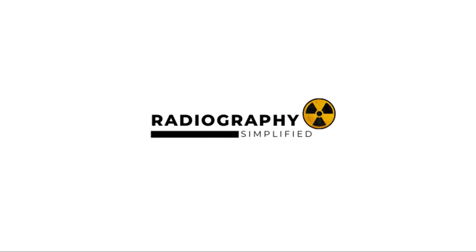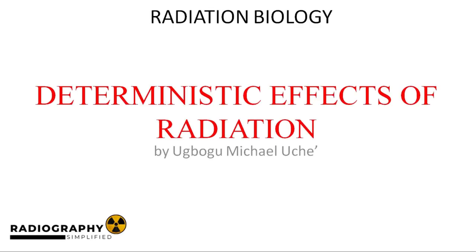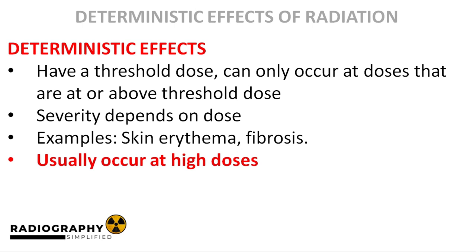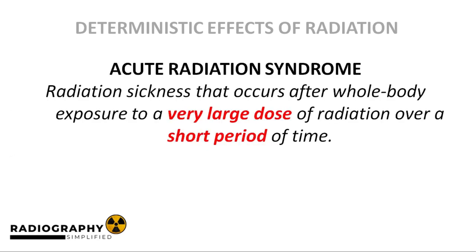Hello, and welcome back to Radiography Simplified. Michael here. We pick up where we left off in the last video by talking about the deterministic effects of radiation in more detail. To recap, deterministic effects are radiation effects which have a threshold dose below which they cannot occur. Their severity increases with dose. We start the conversation by discussing one of the most widely studied deterministic effects of radiation: acute radiation syndrome.